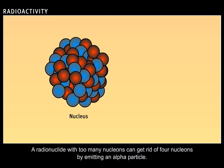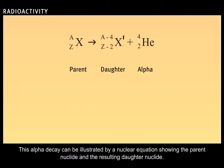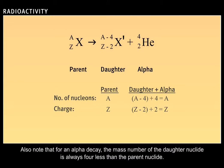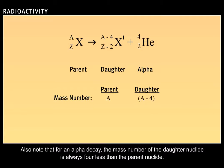A radionuclide with too many nucleons can get rid of four nucleons by emitting an alpha particle. This alpha decay can be illustrated by a nuclear equation showing the parent nuclide and the resulting daughter nuclide. Note that in a nuclear equation, both the number of nucleons and charge are always conserved. Also note that for an alpha decay, the mass number of the daughter nuclide is always four less than the parent nuclide.